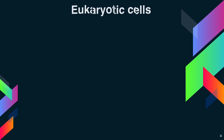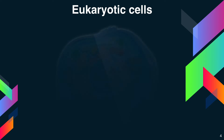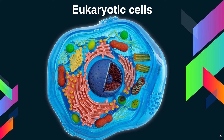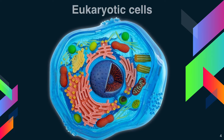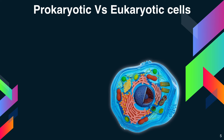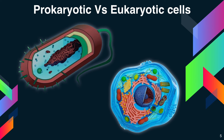Despite these similarities, prokaryotes and eukaryotes differ in a number of ways. A prokaryote is a simple, single-celled organism that lacks a nucleus and membrane-bound organelles.